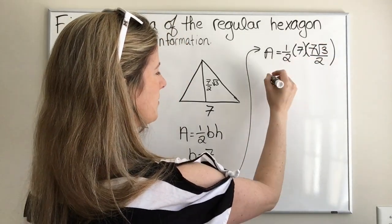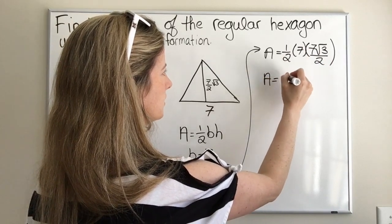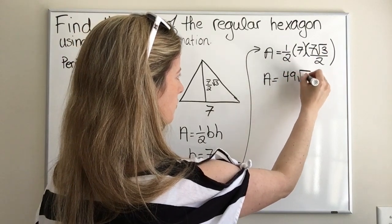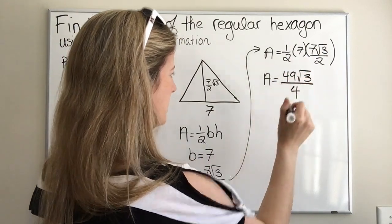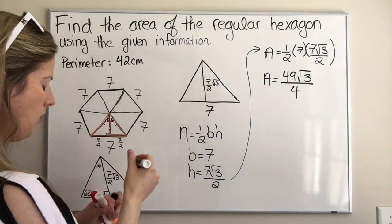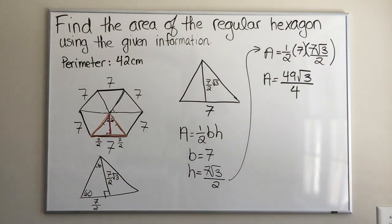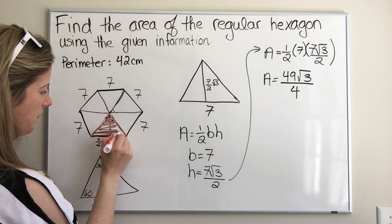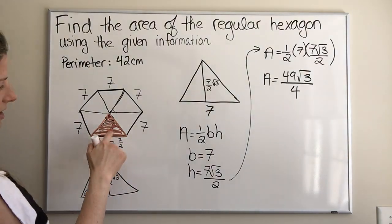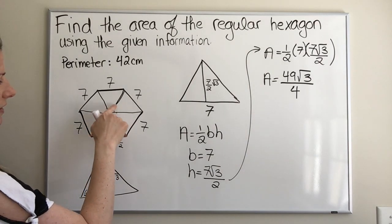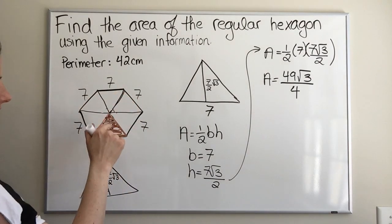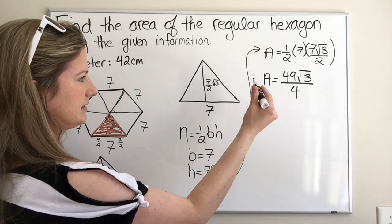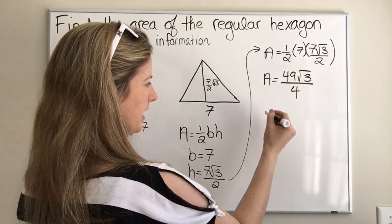So the area equals one half times seven times seven root three over two. That becomes one times seven times seven, which is 49, so the area equals 49 root three over four. Remember, that's the area of just one triangle. So to find the area of the entire hexagon, we just take this and multiply it by six.